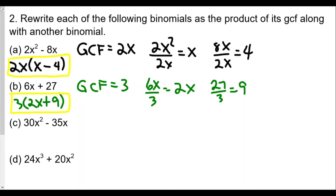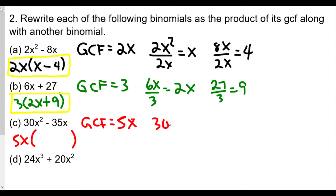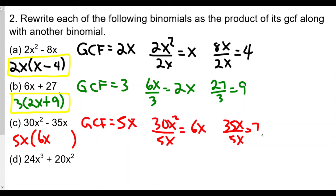For part (c), 30x² − 35x: the GCF has a numerical part and a variable part. The biggest number into 30 and 35 is 5, and between x² and x the smaller variable is x, so the GCF is 5x. Dividing: 30x² ÷ 5x = 6x, and 35x ÷ 5x = 7. The answer for (c) is 5x(6x − 7).